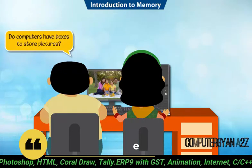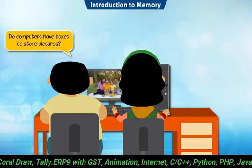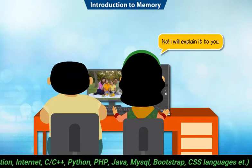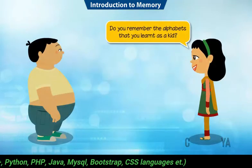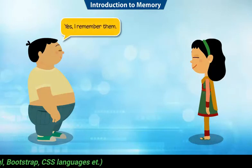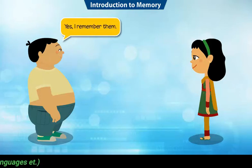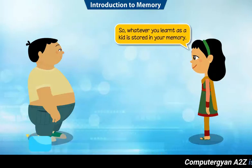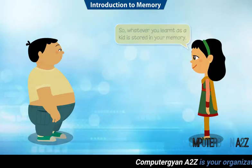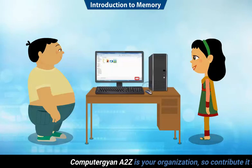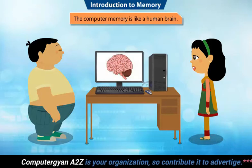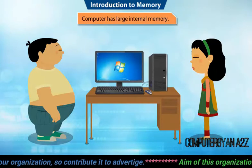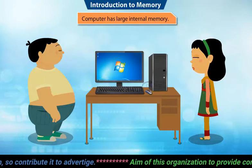Do computers have boxes to show pictures? No, I will explain it to you. Do you remember the alphabets that you learnt as a kid? Yes, I remember them. So whatever you learnt as a kid is stored in your memory. Similarly, the computer stores all the information it gets into its memory. The computer memory is like our human brain. Generally, a computer has large internal memory which can store a huge amount of data.